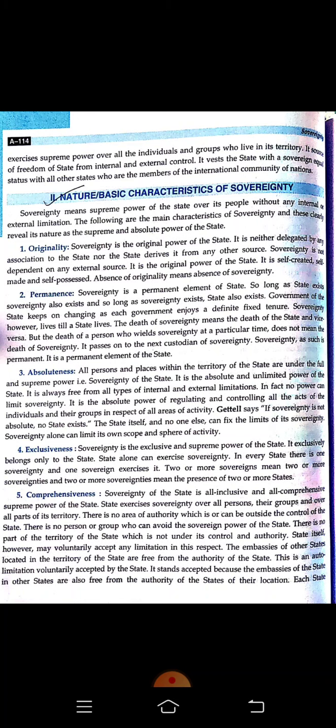Number two is permanency. Sovereignty is a permanent element of state. So long as the state exists, sovereignty also exists, and so long as sovereignty exists, the state also exists. Once the sovereignty of a state is gone, that state will not exist and will come under some other foreign country.